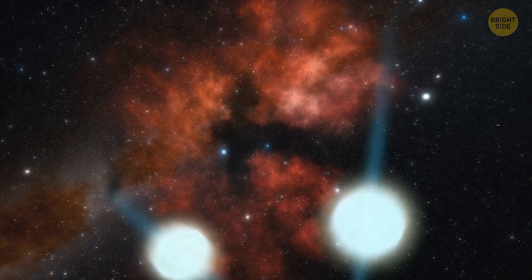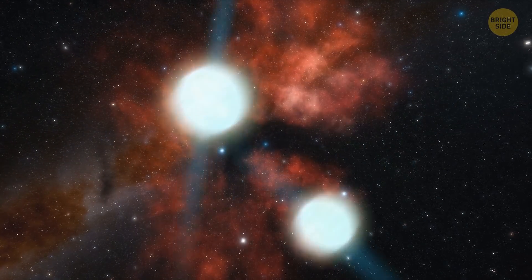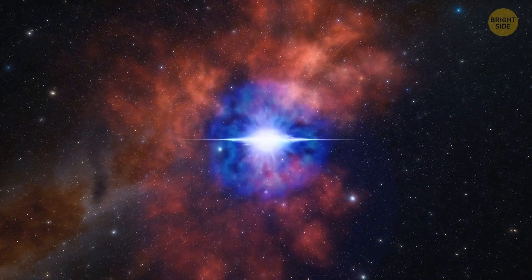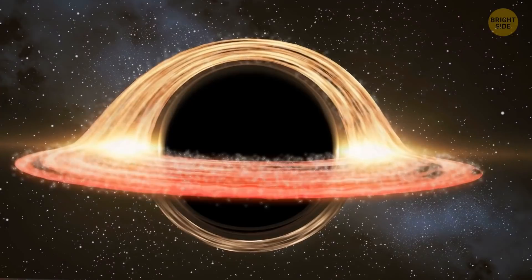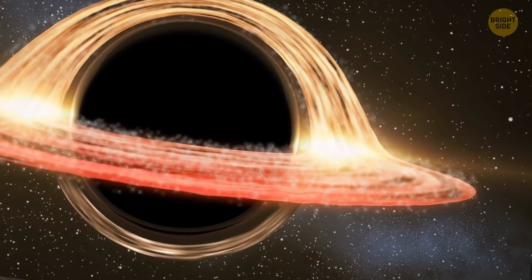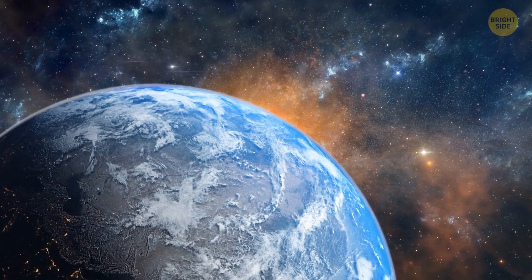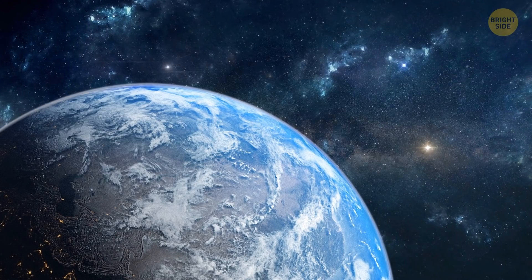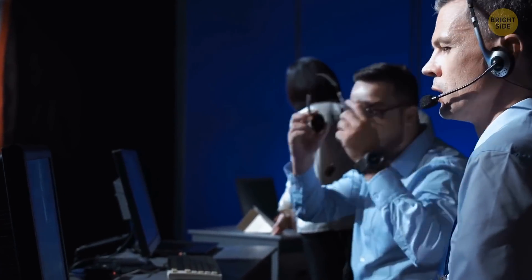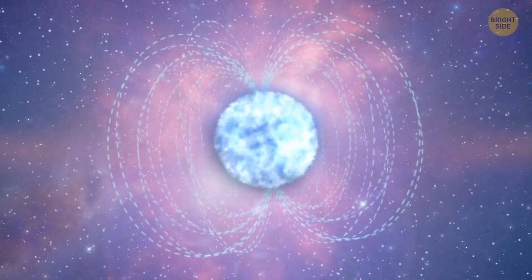When two neutron stars merge, they most often create a new, much heavier one. Within milliseconds, or even less, this star collapses into a black hole. But the astronomers who examined the flash of light recorded in March think there might be another outcome. They're almost sure they saw something never observed before. The birth of a magnetar.